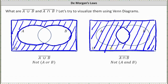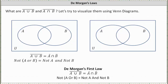Now that we have a better understanding of the complement of the union of A and B and the complement of the intersection of A and B, the question becomes: is there another way to express the same sets? And in fact, there is. The complement of the union of A and B is equal to A complement intersect B complement. Or we can say not (A or B) is equal to not A and not B. Let's go ahead and show this using Venn diagrams.